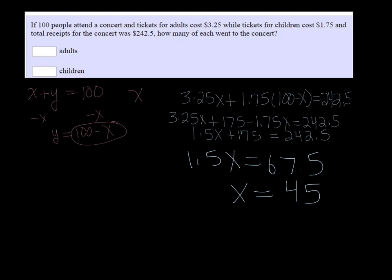So this means that we sold 45 adult tickets. Now remember there's 100 people altogether, so there must have been 55 children.